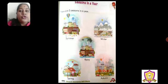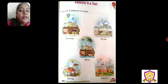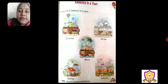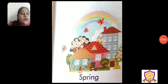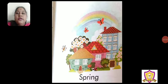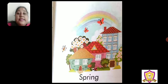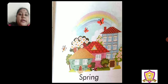So what I will do, children? I will first show you the seasons one by one and explain to you. It might be summer, it might be winter, it might be rainy. So we will start with the first season. That is spring. Spring is a very pleasant season.